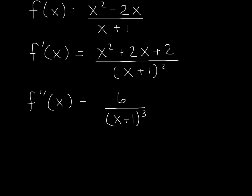So to recap, our original problem was f of x equals x squared minus 2x over x plus 1. We did our first video and found the first derivative to be x squared plus 2x plus 2 over x plus 1 quantity squared.